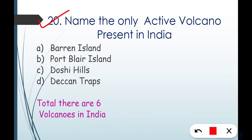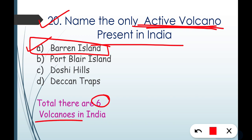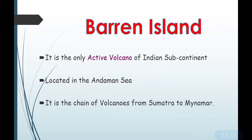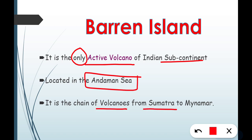Question number twenty: name the only active volcano present in India. Options are Barren Island, Port Blair Island, Dawson Hills, or Deccan Traps. The correct answer is Barren Island, located in the Andaman Sea. There are six volcanoes in India, but the only active one is Barren Island. It is part of the chain of volcanoes from Sumatra to Myanmar and is part of the Ring of Fire.